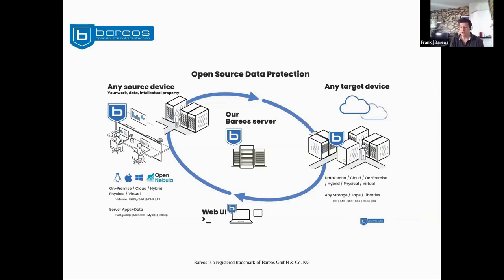Here's a small chart showing how we can work in your infrastructure. I've put the Barreos server — we call it the Barreos Director — in the middle. The Director carries all information about the scheduling systems, the number of clients, the source IP, and the target devices. This can be anything local or remote, or both — on-premise, off-premise, physical, or virtual.